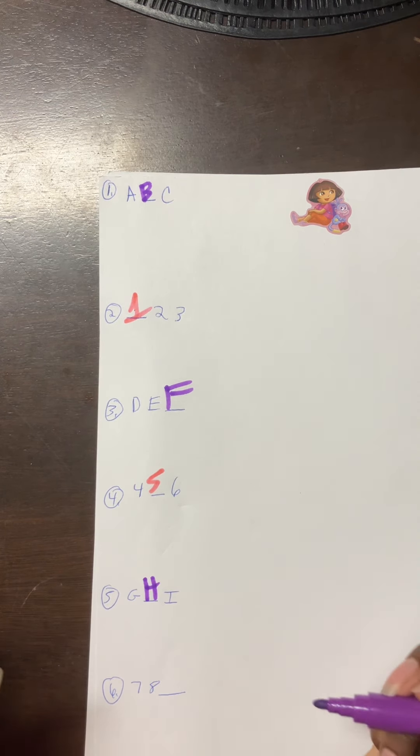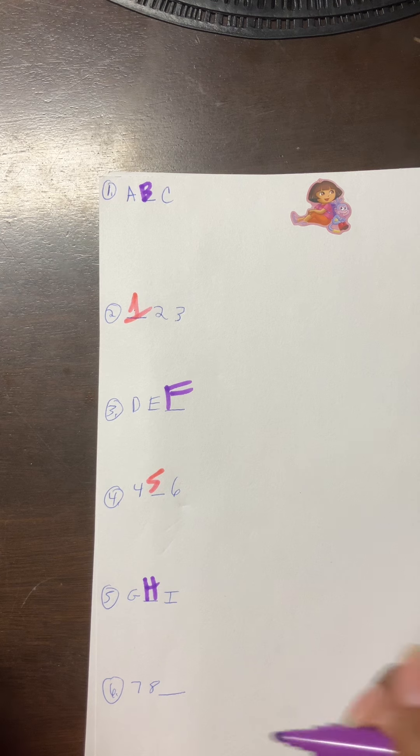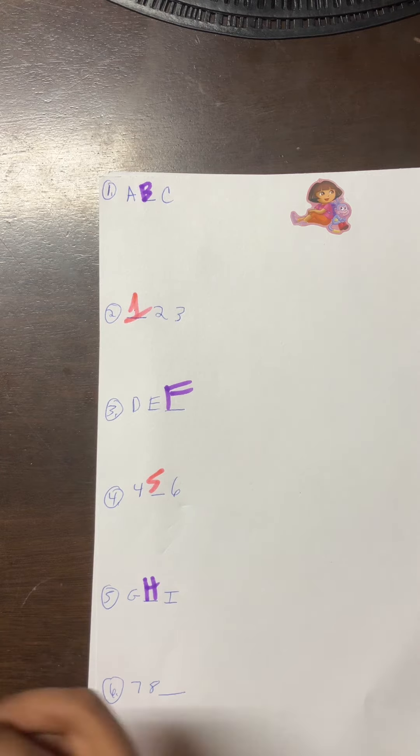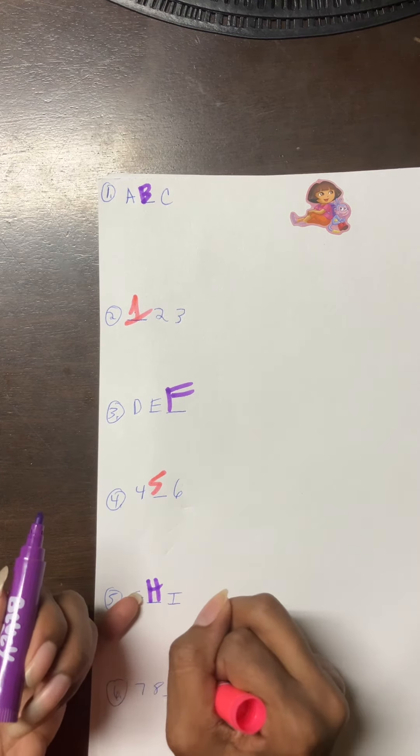Number six: 78 blank. One two three four five six seven eight and nine. So we're gonna write nine right here. Then we're gonna flip to the back.